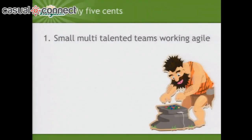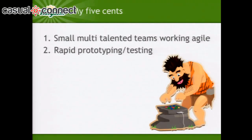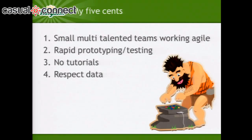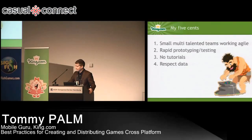Just my five cents on creating cross-platform games. Small, multi-talented teams working in agile project methodology like Scrum is one of the key factors. Rapid prototyping and testing — I mentioned how we do that at King. No tutorials is a good measurement: if your game needs a tutorial already from the start when you're developing it, you're probably not in the casual segment. You can add a tutorial later, but there shouldn't be a need for it. The respect of data — a lot of people have to be employed to gather, analyze, and act on data. Currently we collect about 2.5 billion data points each day from our games, and it's a daunting task to get useful information from that.